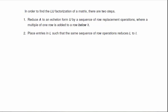In order to find this, we'll have two steps. Step one is to reduce the matrix to an echelon form of U by a sequence of row replacement operations where a multiple of one row is added to a row below it. So not only are we restricting to one operation, we're only letting us add to rows below rather than above. We will then place entries in L such that the same sequence of row operations that we did in step one reduces L to the identity.